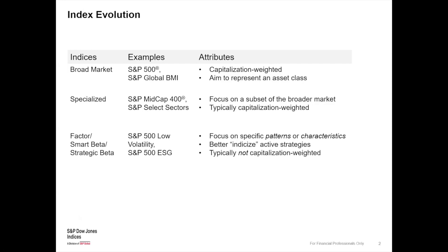When you weight an index just by the stock's price, you're not measuring the size of the company — you're just measuring the cost per share, which is somewhat arbitrary since it's determined by the number of outstanding shares. It took about 70 years to evolve to a broad market-cap index like the S&P 500, which represents about 80% of the U.S. equity market. With cap-weighted indices, the biggest companies have the largest allocation.